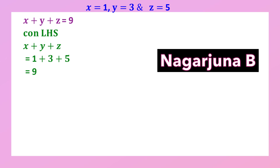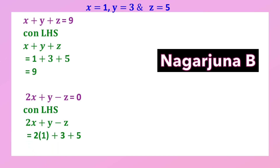For the second equation, 2x plus y minus z: LHS = 2 into 1 plus 3 minus 5 = 2 plus 3 minus 5 = 0 = RHS. The values are correct for the second equation as well.